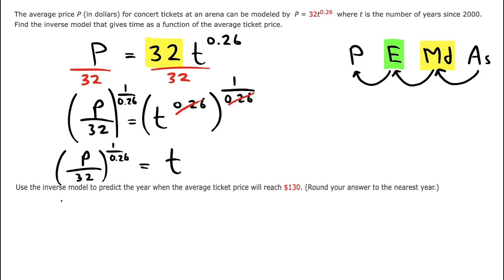All right, this problem also says, can we use the inverse model to make a prediction for what year would the ticket price reach $130? So I would want to use my inverse for that, because they're asking me for the time, predict the year, and they're giving me a price, p. So I'm going to let p be $130, and I'm going to find t.